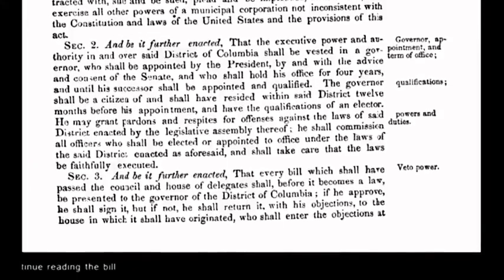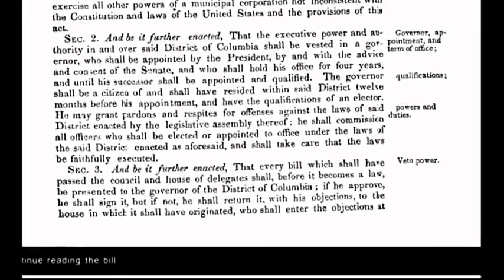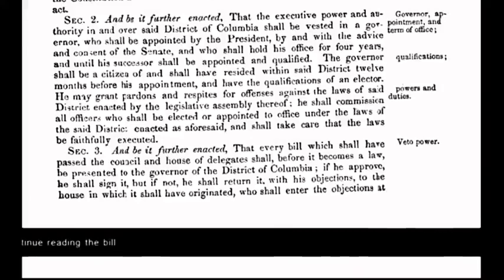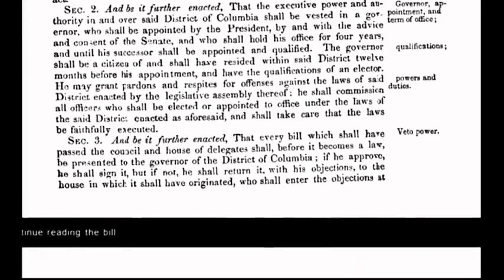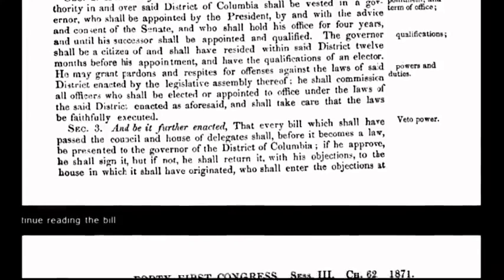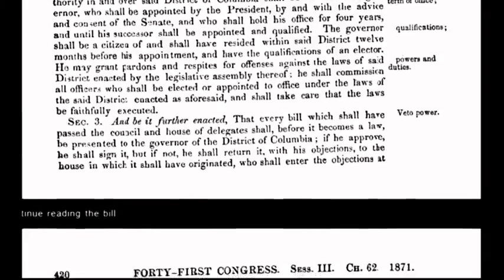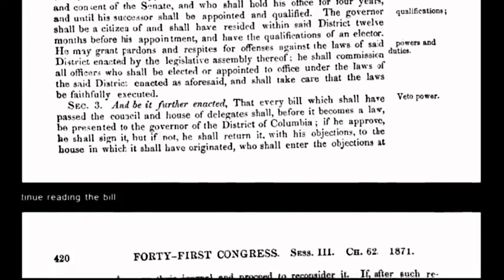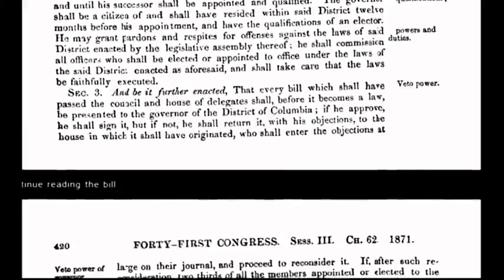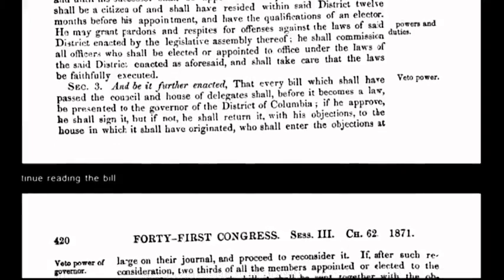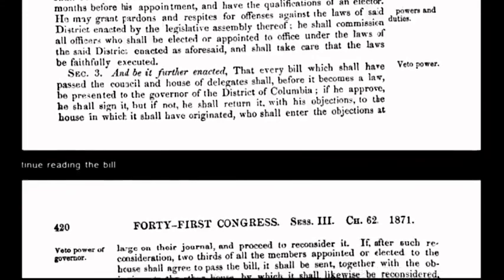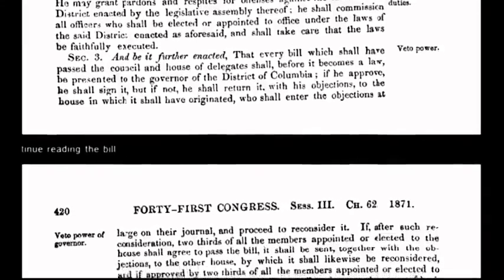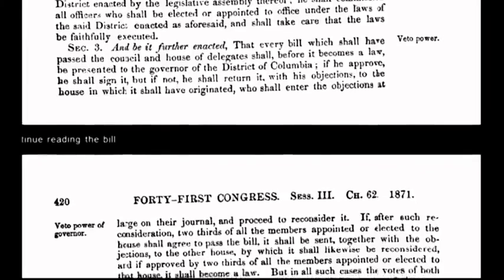Capitalization is not insignificant when one is referring to a legal document. This seemingly minor alteration has had a major impact on every subsequent generation of Americans. What Congress did by passing the Act of 1871 was create an entirely new document — a constitution for the government of the District of Columbia, an incorporated government. This newly altered constitution was not intended to benefit the republic. It benefits only the corporation of the United States of America and operates entirely outside the original, organic constitution.